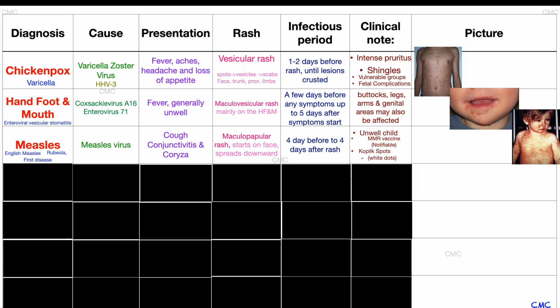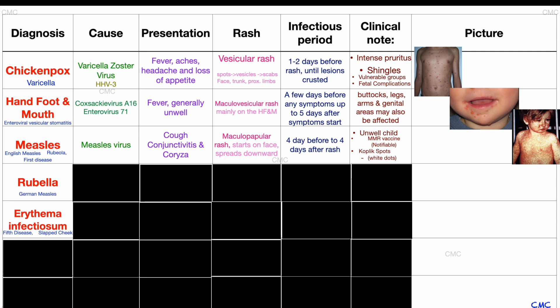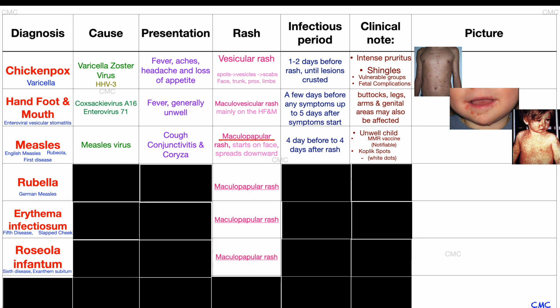We are going to look at the next three infections — rubella, erythema infectiosum and roseola infantum — together, because just like the measles rash, these three diseases also all cause maculopapular rashes. In other words, the rash will have both flat discolored areas called macules and small raised bumpy areas called papules. Because the rashes are so similar, we need to explore these three conditions together to compare and contrast the subtle differences in presenting complaint and clinical signs which will give away the diagnosis.